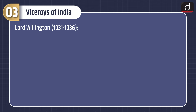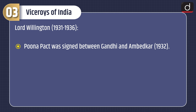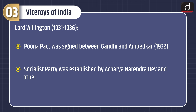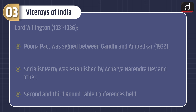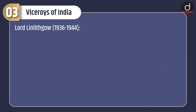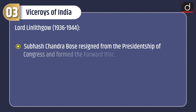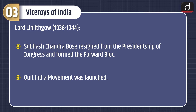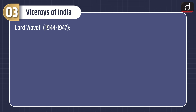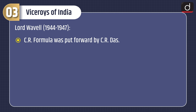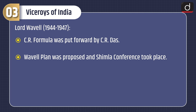Lord Willingdon, 1931–1936: the Poona Pact was signed between Gandhi and Ambedkar in 1932. The Socialist Party was established by Acharya Narendra Dev and others. The Second and Third Round Table Conferences were held. Lord Linlithgow, 1936–1944: Subhash Chandra Bose resigned from the Presidentship of Congress and formed the Forward Bloc. The Quit India Movement was launched. Lord Wavell, 1944–1947: the C.R. formula was put forward. The Wavell Plan was proposed and the Shimla Conference took place. The Cabinet Mission Plan was proposed.